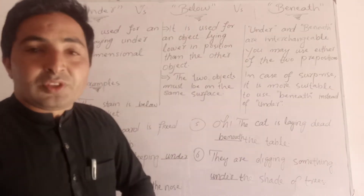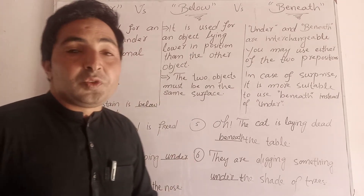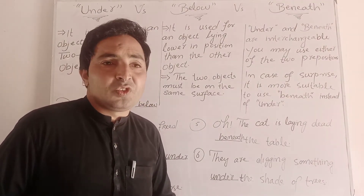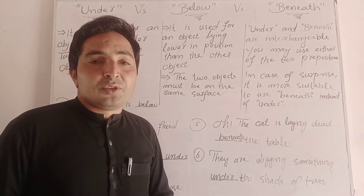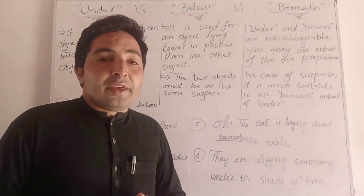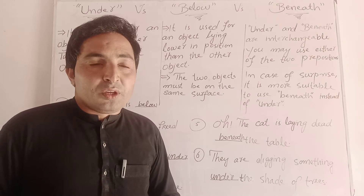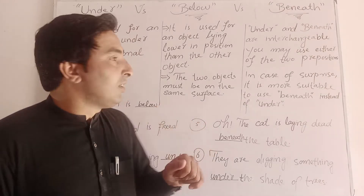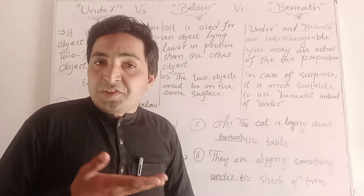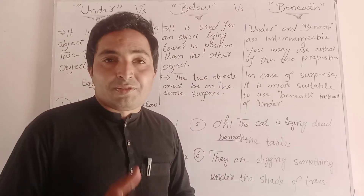The two-dimensional object — the question arises: what is a two-dimensional object? A two-dimensional body is the ground floor or a flat surface. Below is used for an object lying lower in position than another object, but one thing is necessary: both objects must share the same surface.